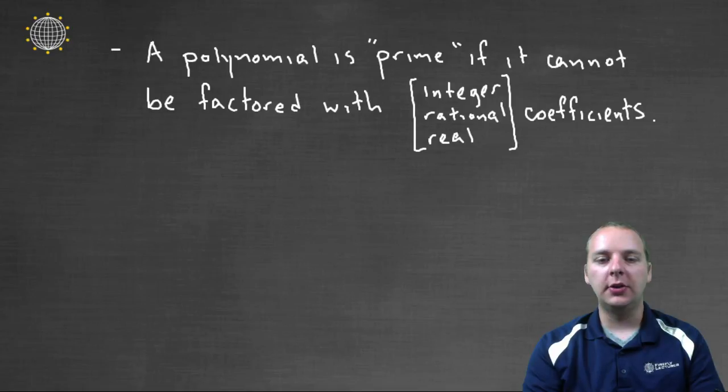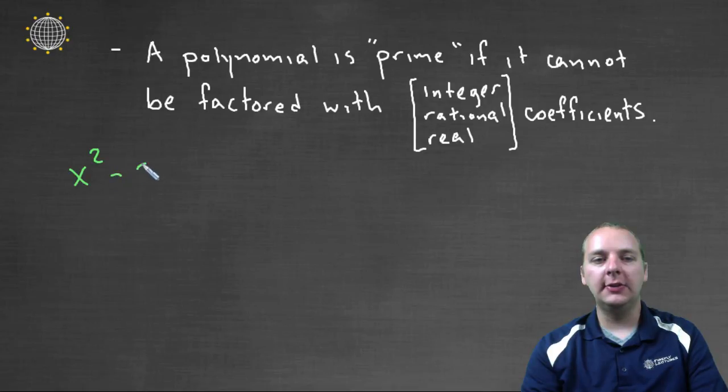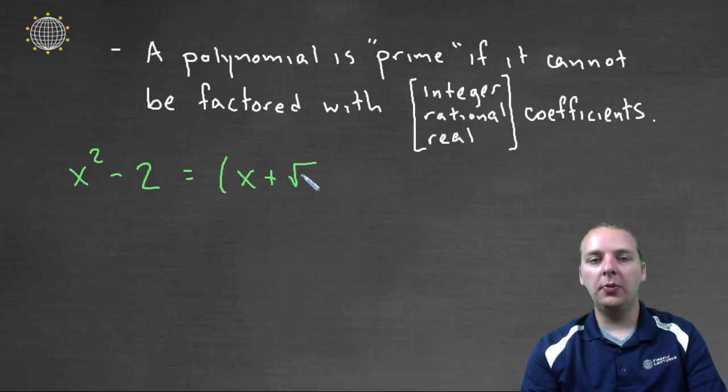And I'll give you an example. I'll show you exactly what I'm talking about here. Let's say we had, for example, x squared minus two. Well without going into a lot of the details, this will factor as x plus the square root of two times x minus the square root of two.